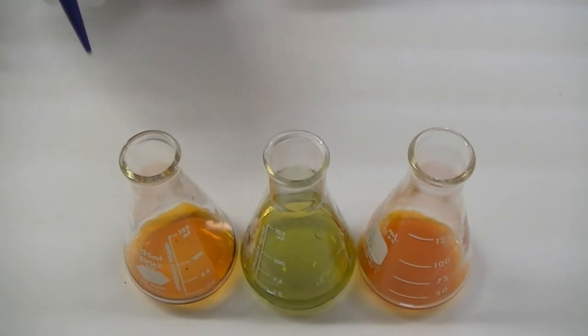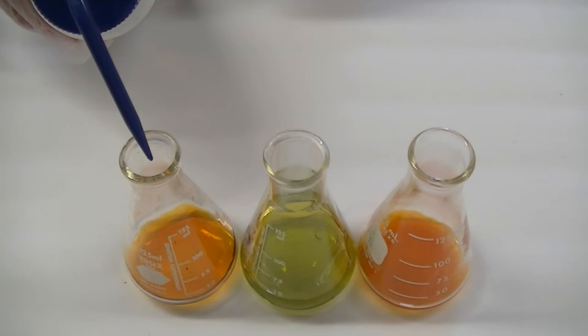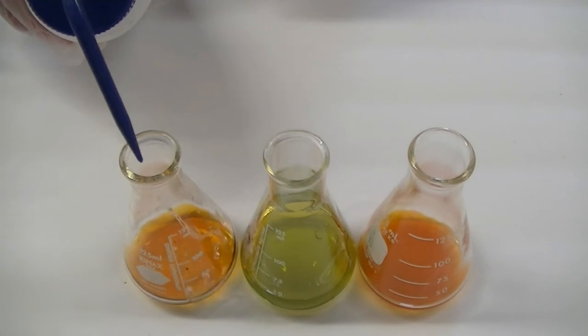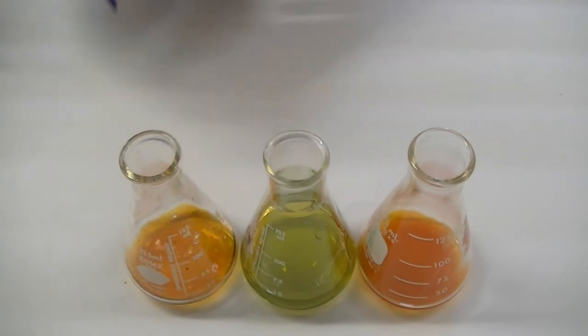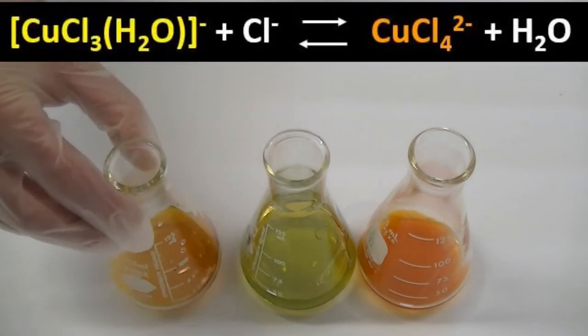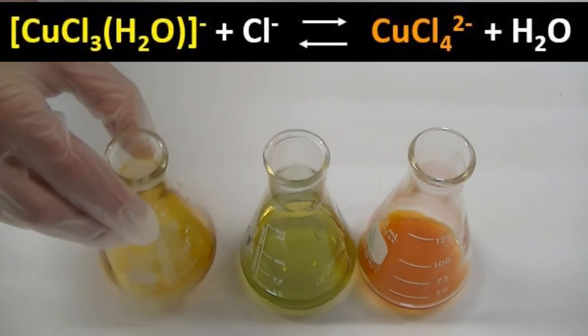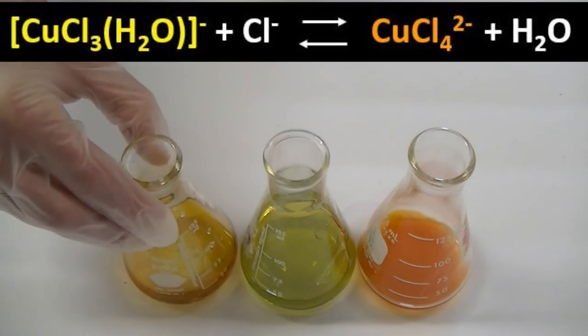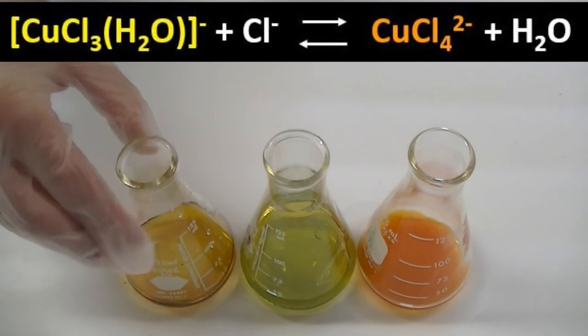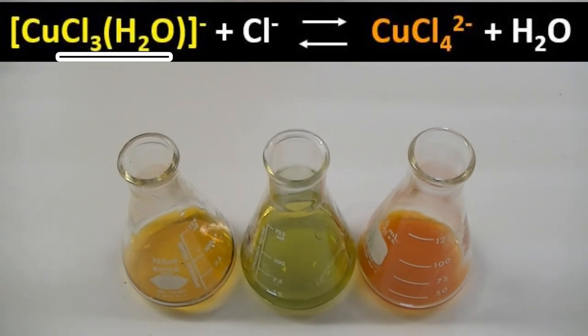The addition of water to an acetone-based solution of the tetrachloro-copper species induced a color change from orange to yellow. This color change makes sense if we consider the chemical equation above. Note that in this equation, a shift of equilibrium from right to left is expected upon addition of water. Also notice that such a shift involves the formation of the yellow-colored trichloro-copper compound, consistent with our observations.